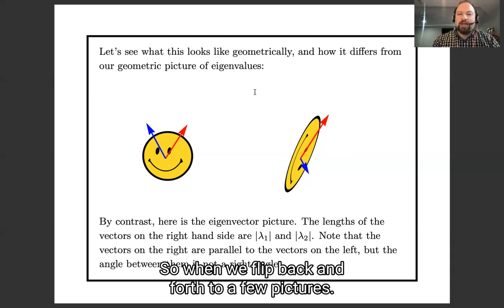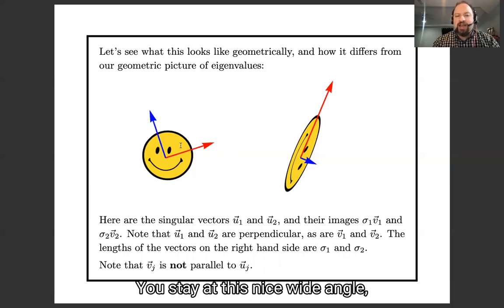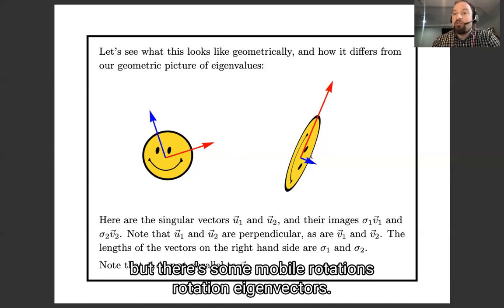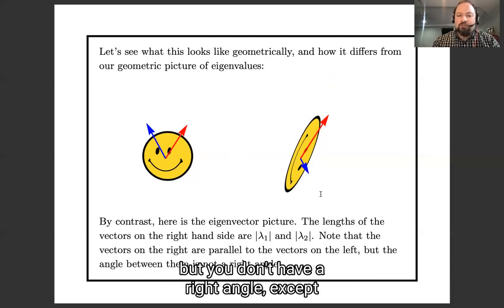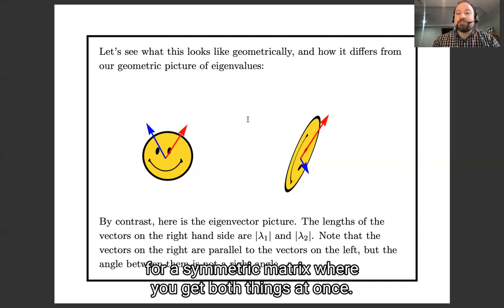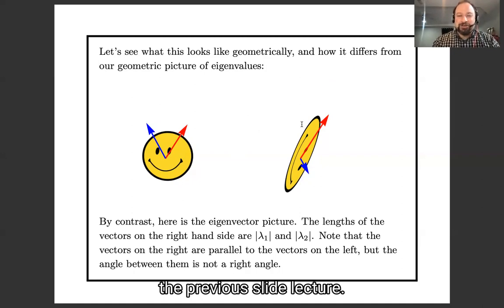So here I have now drawn the eigenvectors of this matrix. This red eigenvector is sent over to here. This blue eigenvector is negated and sent over here. You can see that this is parallel to this. And this is parallel to this. So they're eigenvectors, but they are not orthonormal. This angle is clearly an acute angle, and this angle is clearly an obtuse angle. So when we flip back and forth to your two pictures, singular vectors, you stay at this nice right angle, but there's some global rotation.